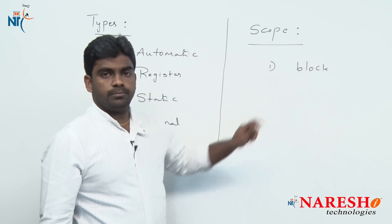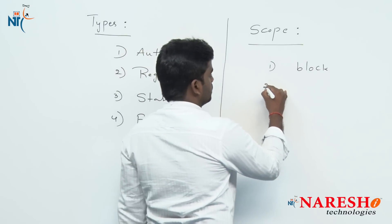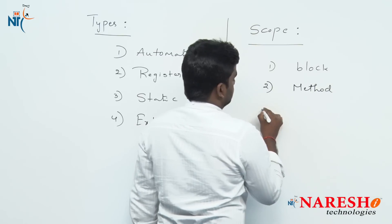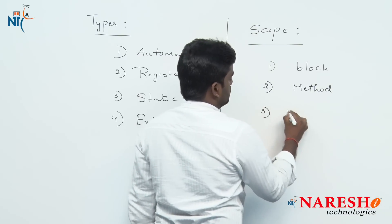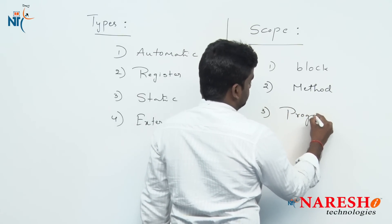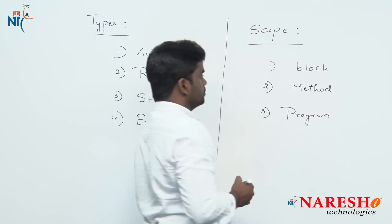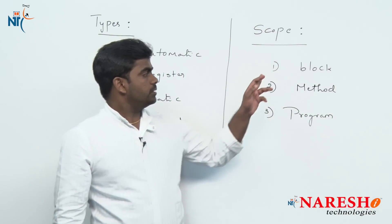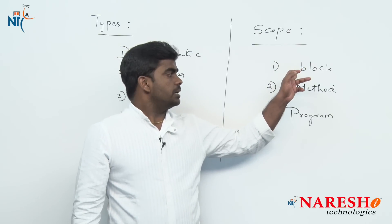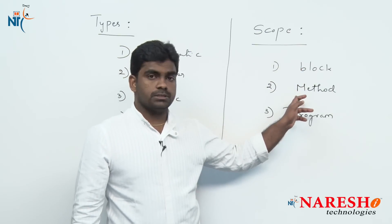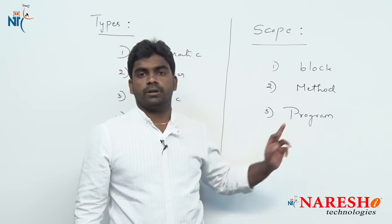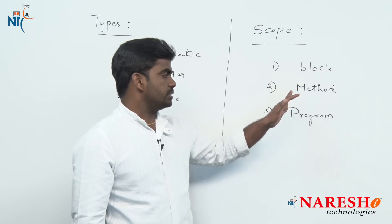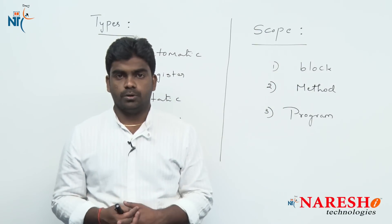The first scope is block scope — within a block or within a method. A method also comes under one type of block. One method can have n number of blocks, like if-block, else-block, for-loop, while-loop — all these also come under blocks. The second one is method scope, and the third one is program scope. A variable can be under block scope, method scope, or program scope.